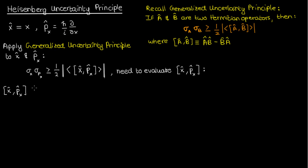A good idea when evaluating a commutator is to apply it to a dummy function or a dummy vector, because after all a commutator is still an operator. Applying a dummy function or vector like f will help you keep things in check and avoid bad mathematical mistakes. In the end you can take out your dummy function or vector and just be left with an operator after you've done all your algebra. So let's start by expanding this out using the definition of the commutator.